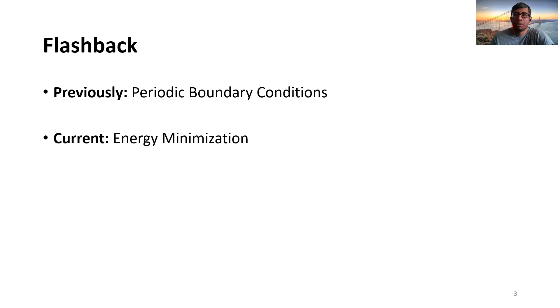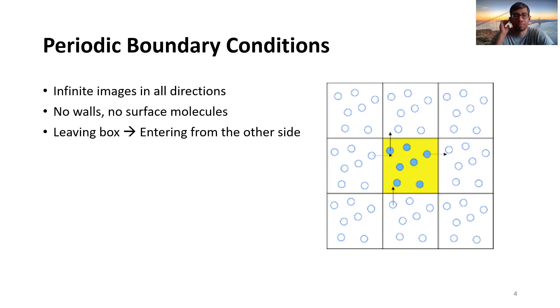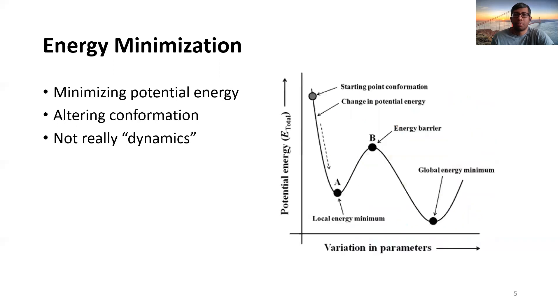And now we'll learn about another concept, energy minimization. So this is a flashback of the previous lecture where we have shown that a central box is actually extended or copied infinitesimally in all directions to get a macroscopic level of properties or a bulk property.